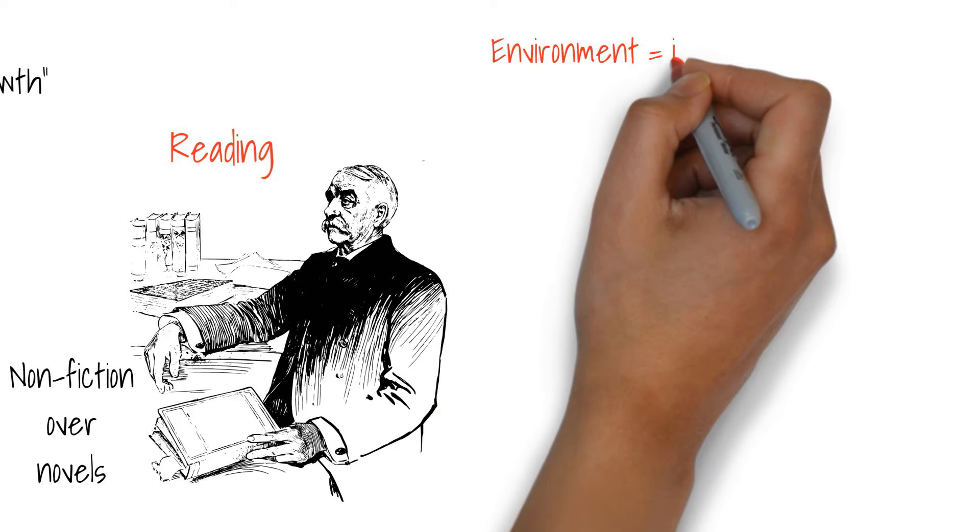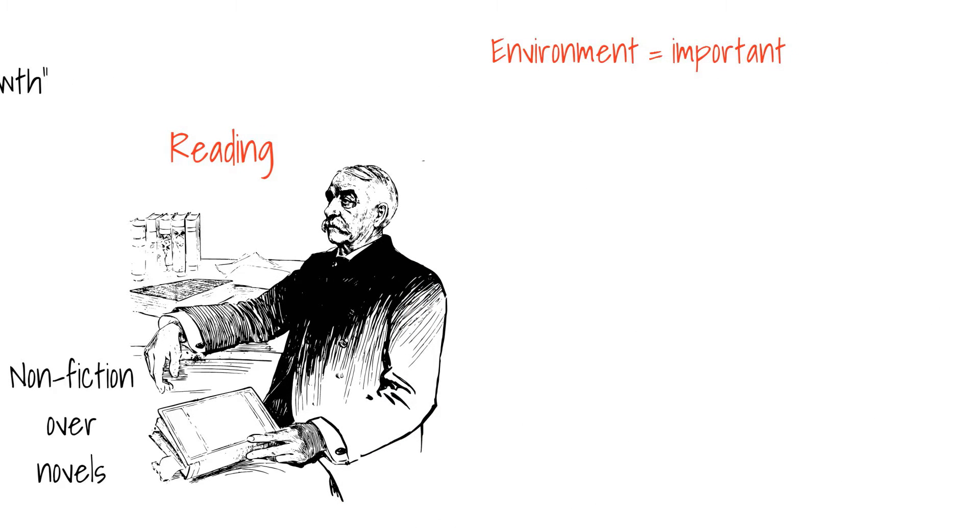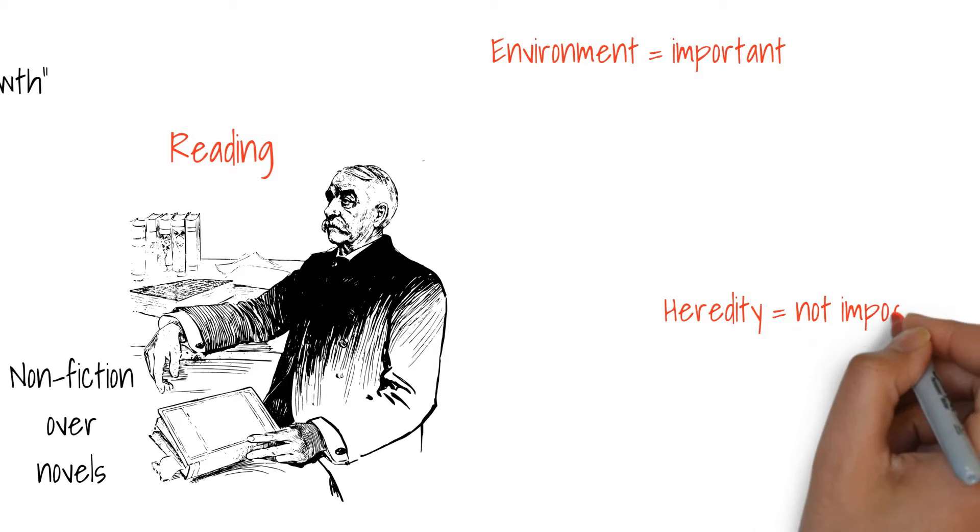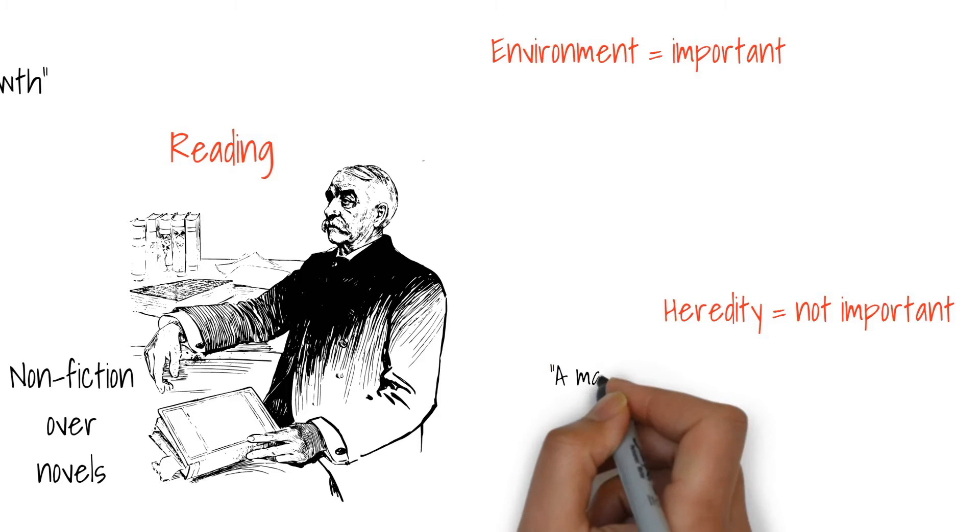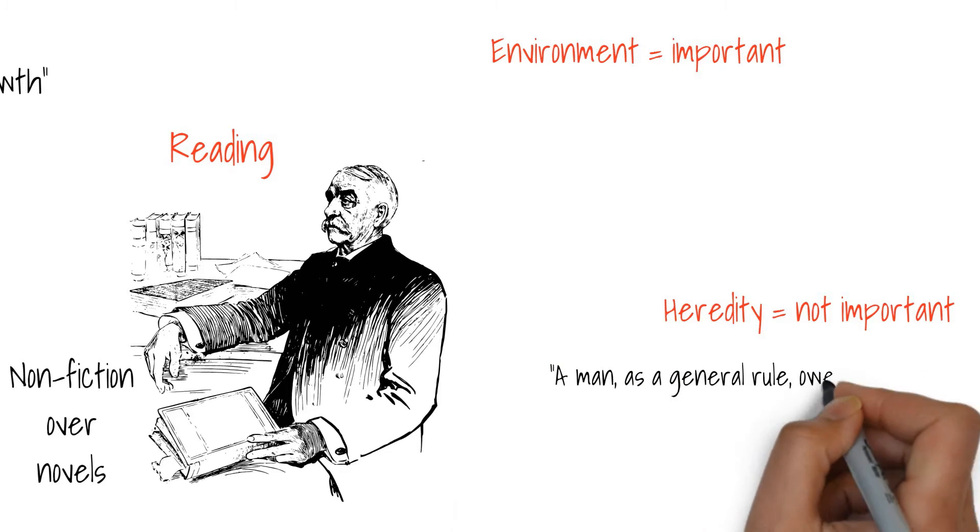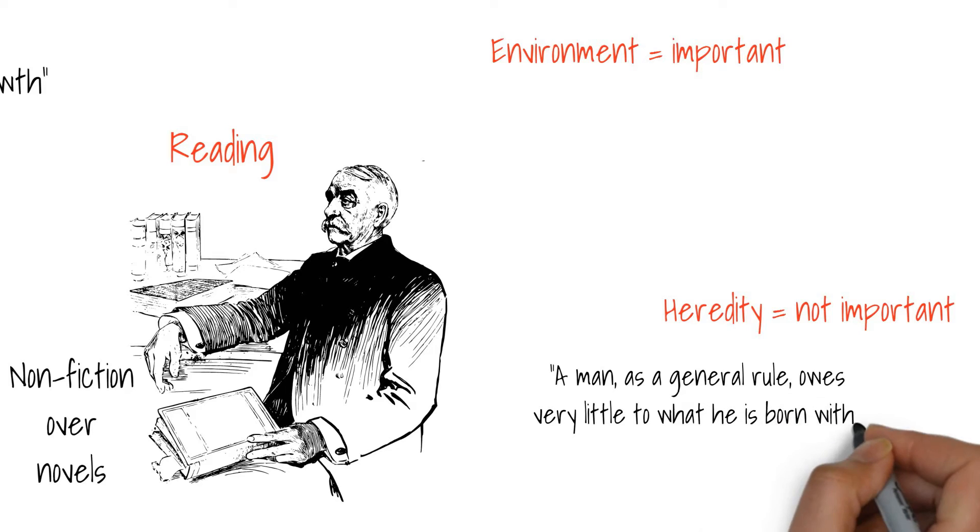Your environment is a significant factor in your success according to Bell, but your heredity not so much. He thought that a person could stamp out any faults that they may have inherited. A man, as a general rule, owes very little to what he is born with. A man is what he makes of himself.